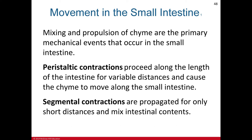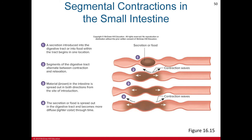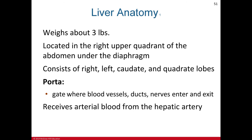Movement in the small intestine is similar to the stomach. Mixing and propulsion of chyme are the primary mechanical events. Peristaltic contractions proceed along the length of the intestine for variable distances, causing chyme to move forward. Segmental contractions propagate for only short distances and mix intestinal content. The key difference: peristaltic contractions cover variable distances while segmental contractions cover only short distances.